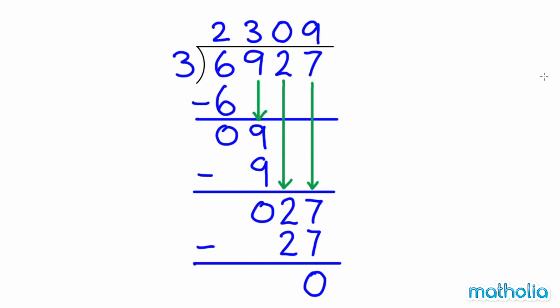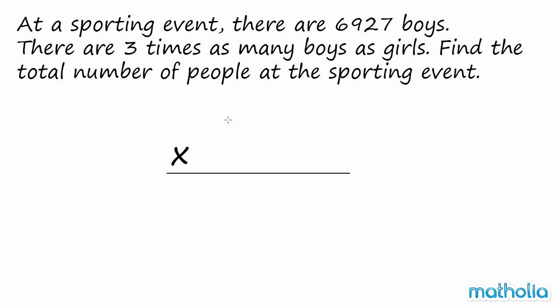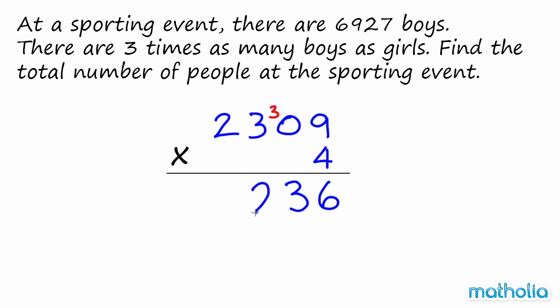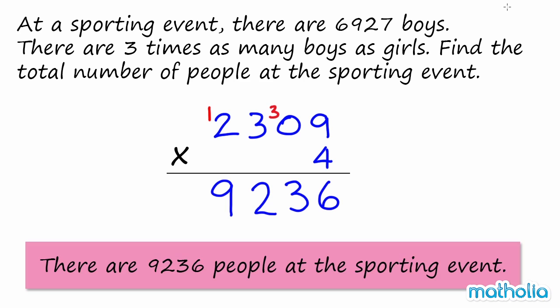To find the total number of people, we now need to multiply the value of 1 unit by 4. 2,309 times 4 equals 9,236. There are 9,236 people at the sporting event.